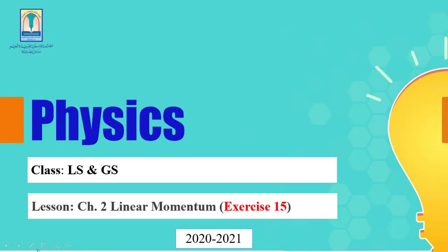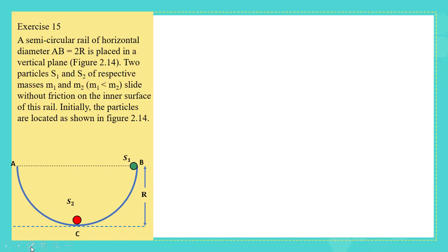Assalamu alaikum wa rahmatullahi wa barakatuh. This video is about solving exercise number 15 in our book. The exercise states that a semicircular rail of horizontal diameter AB equals 2R is placed in a vertical plane. Two particles S1 and S2 of respective masses M1 and M2, such that M1 is less than M2, slide without friction on the inner surface of this rail. We are given: AB equals 2R, M1 less than M2, and there is no friction.